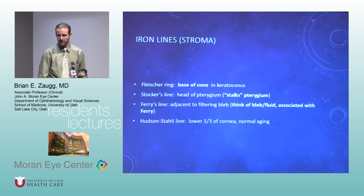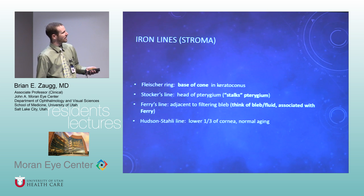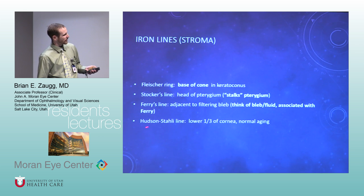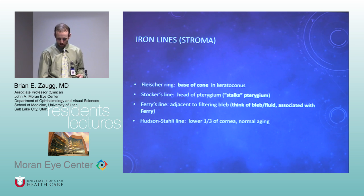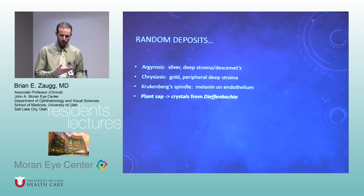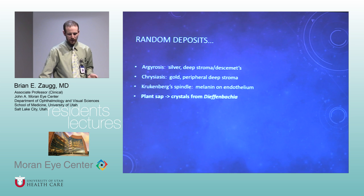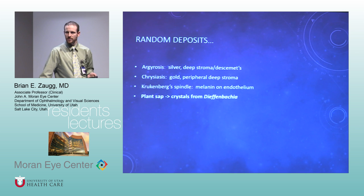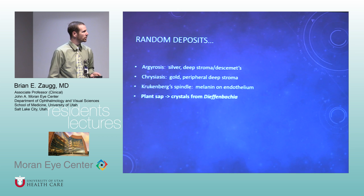Iron lines — another test question. Stocker's line is at the pterygium, Fleischer's ring is in keratoconus, Ferry's line is by a bleb, and the Hudson-Stähli line is normal aging at the inferior cornea where lower lid tears hang out. Other deposits: Krukenberg spindle is the most common — melanin on the endothelium. Argyrosis causes a bluish-silver discoloration of the sclera.